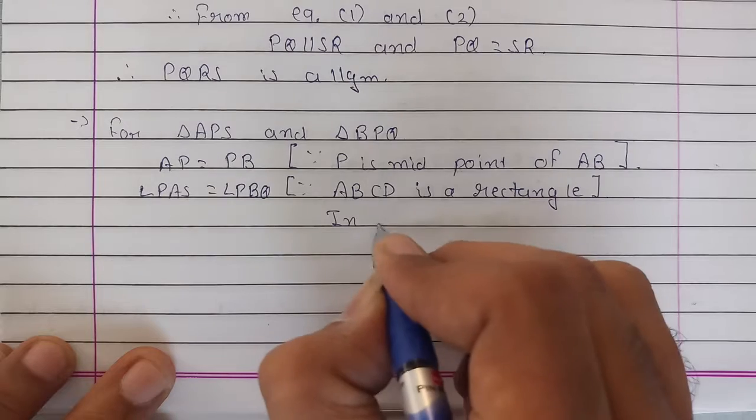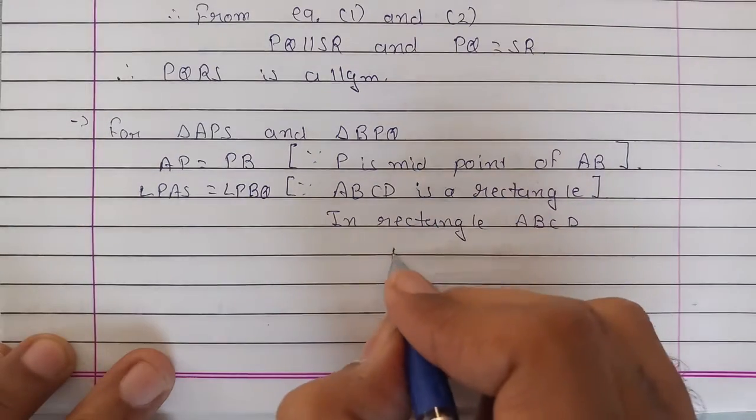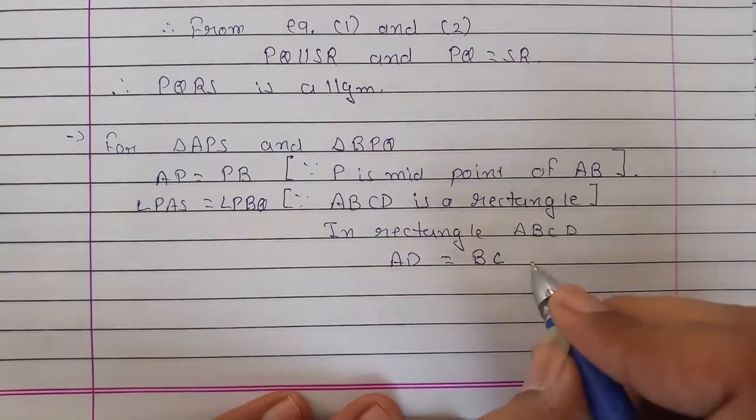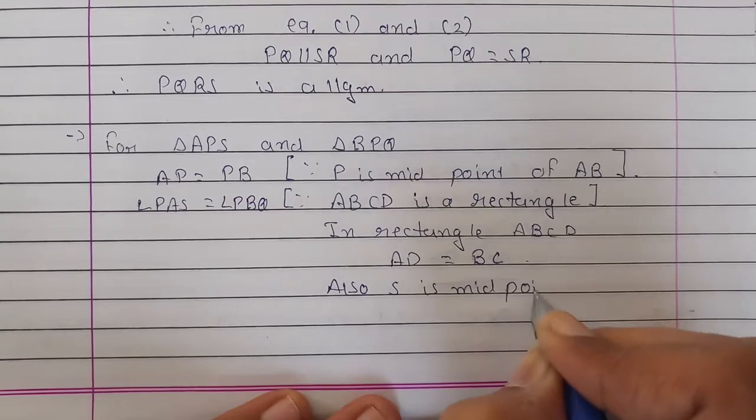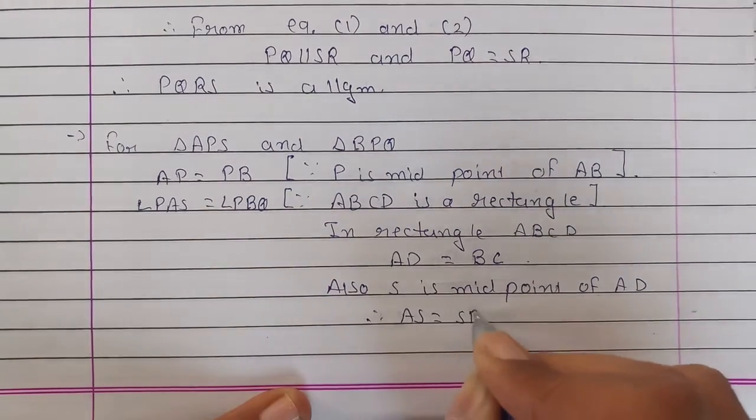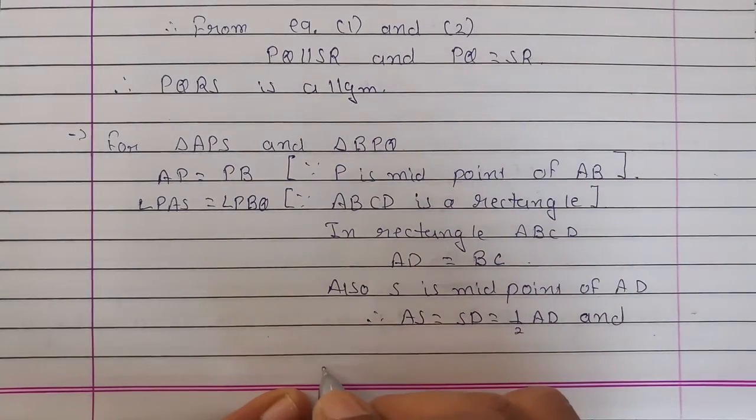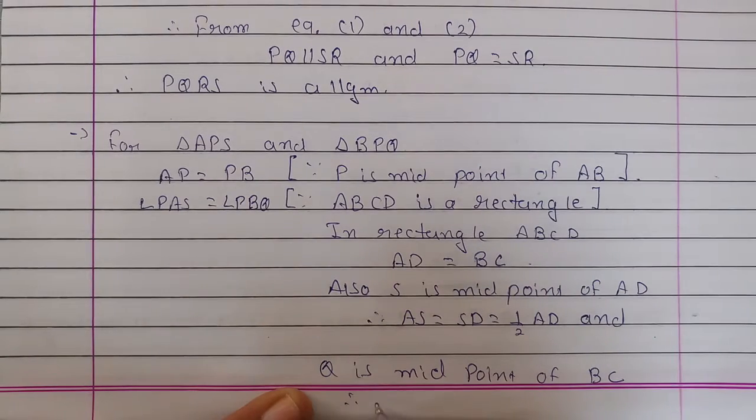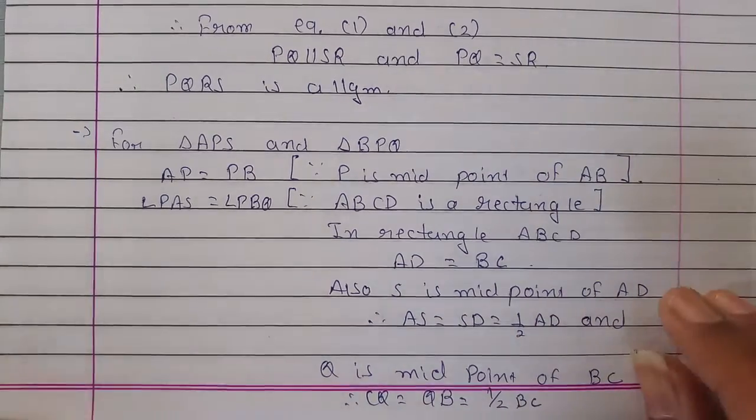In rectangle ABCD, AD is equal to BC. Also, S is midpoint of AD. Therefore, AS is equal to SD is equal to half of AD. And similarly, Q is midpoint of BC. This means CQ is equal to QB is equal to half of BC.